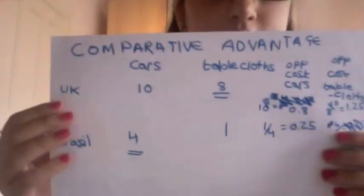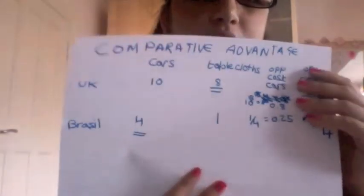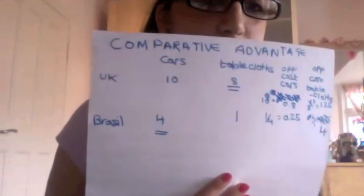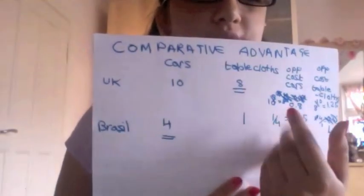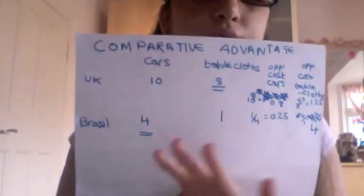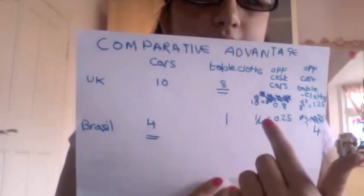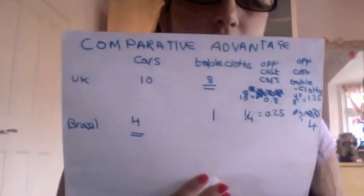Usually people end up trading; if their opportunity cost is the same, then there's not really any advantage and it doesn't matter who produces what. Let's look at an example with tablecloths and cars between the UK and Brazil. The UK and Brazil each get 100% of their resources split 50% in tablecloths and 50% in cars. The UK produces 10 cars and 8 tablecloths, and Brazil produces 4 cars and 1 tablecloth.